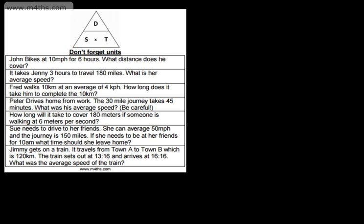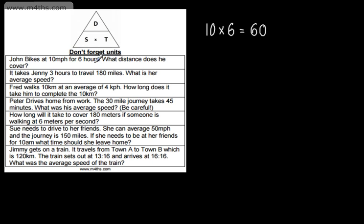Let's go ahead and answer some very basic questions. John bikes at 10 miles an hour for 6 hours. We're asked to find the distance he covers. I'm looking for the distance, so I cover the D, and I know that's speed multiplied by time. My speed is 10 multiplied by my time, which is 6. That gives me 60. The speed is miles per hour and the time is hours, so the distance covered is going to be 60 miles.